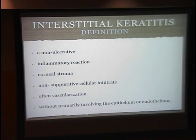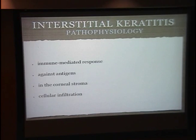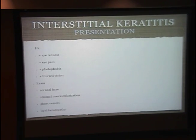The definition of interstitial keratitis, commonly referred to as IK, is a non-ulcerative inflammatory condition of the corneal stroma, characterized by a non-suppurative cellular infiltrate, often accompanied by vascularization, and not primarily involving either the epithelium or endothelium. The pathophysiology is thought to be mostly immune-mediated against antigens — both infectious and non-infectious — in the corneal stroma, accompanied by cellular infiltration.